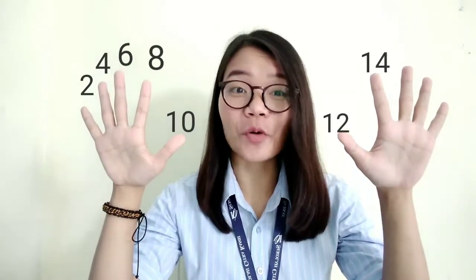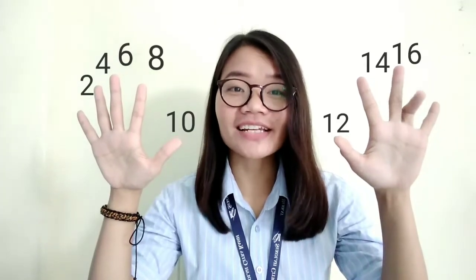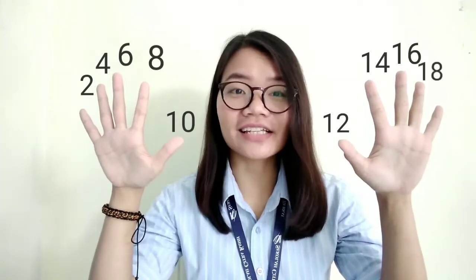So it will be like this: 1 times 2 is equal to 2, 2 times 2 is 4, 3 times 2 is 6, 4 times 2 is 8, 5 times 2 is 10, 6 times 2 is 12, 7 times 2 is 14, 8 times 2 is 16, 9 times 2 is 18, 10 times 2 is 20.